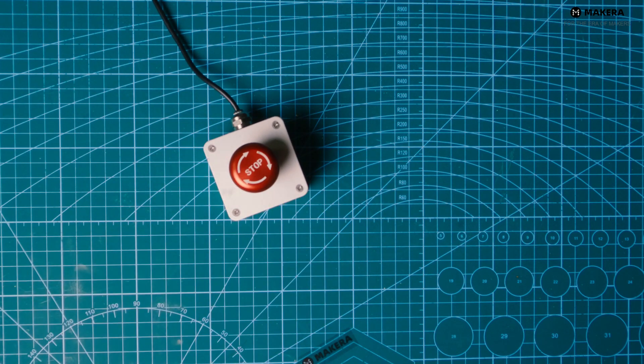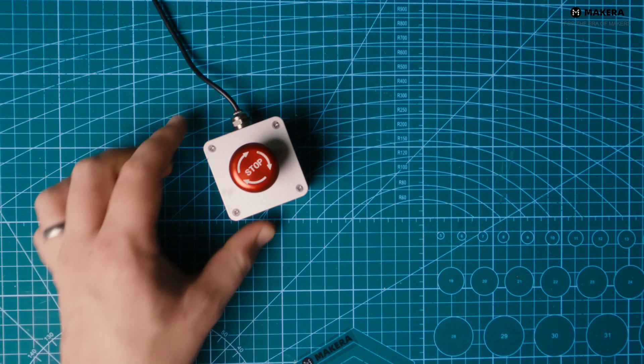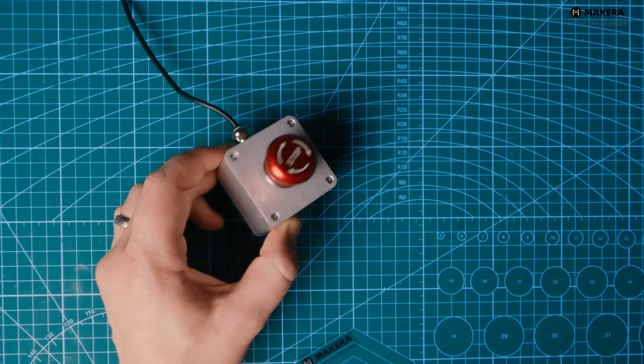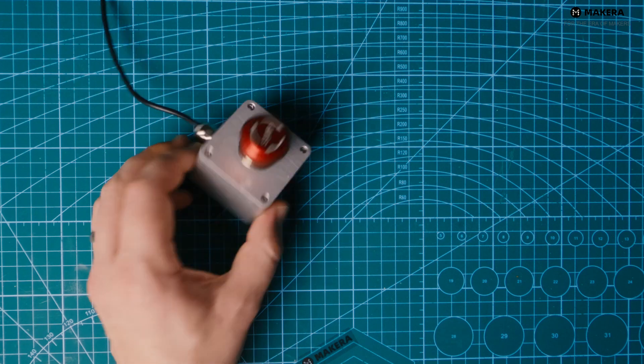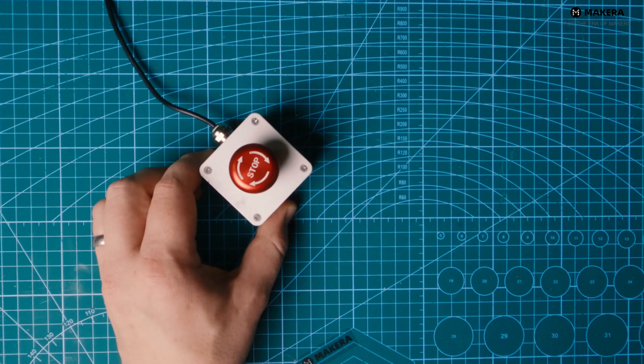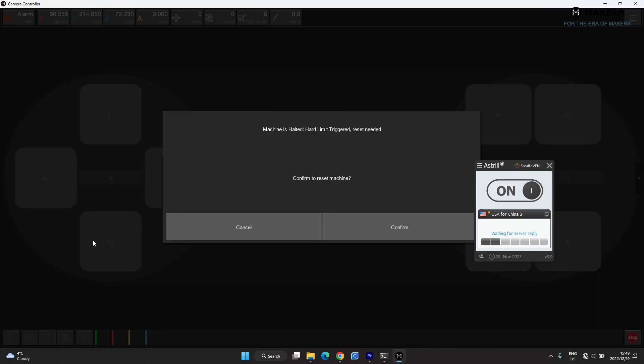Emergency stop button. My favorite. Who doesn't like a big red button? This unit has exactly the same function as the button in front of the machine. Press this if you see a collision is about to happen or if there's something wrong with your cut.